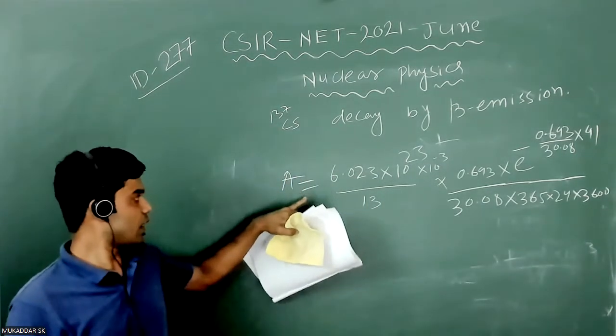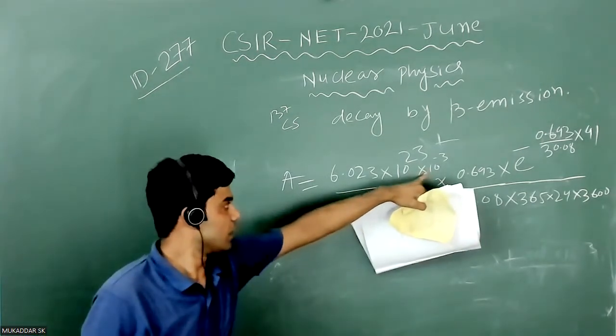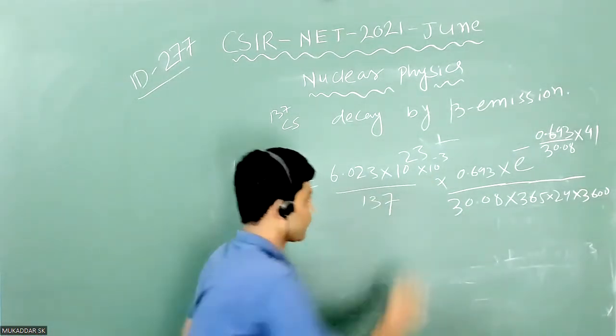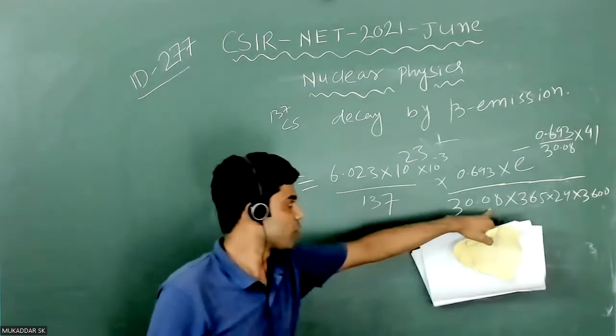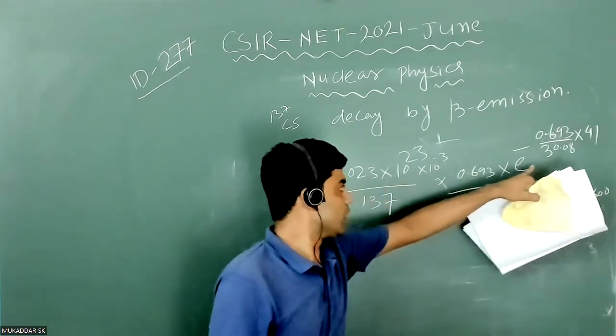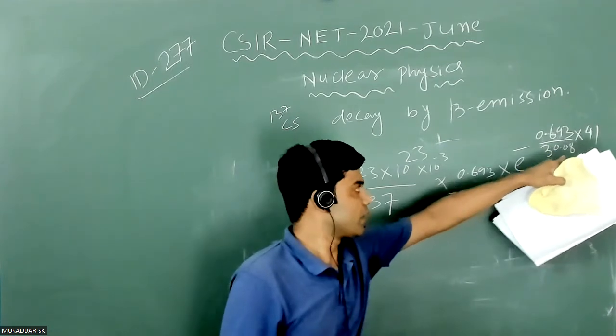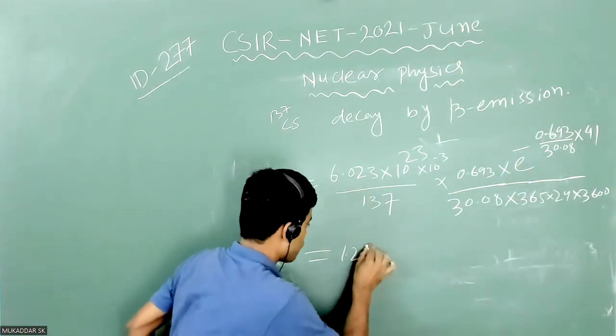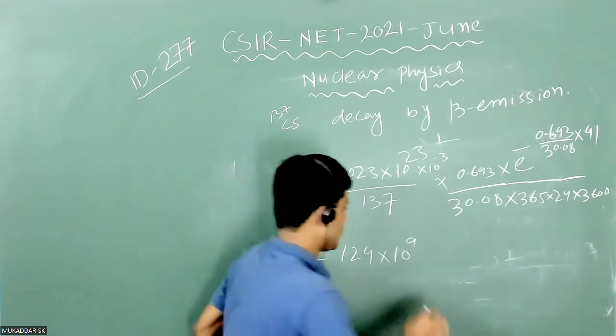So calculating: (6.023×10²³×10⁻³/137) × (0.693/(30.08×365×24×3600)) × e⁻(0.693×41/30.8) = 1.24×10⁹ decays per second.